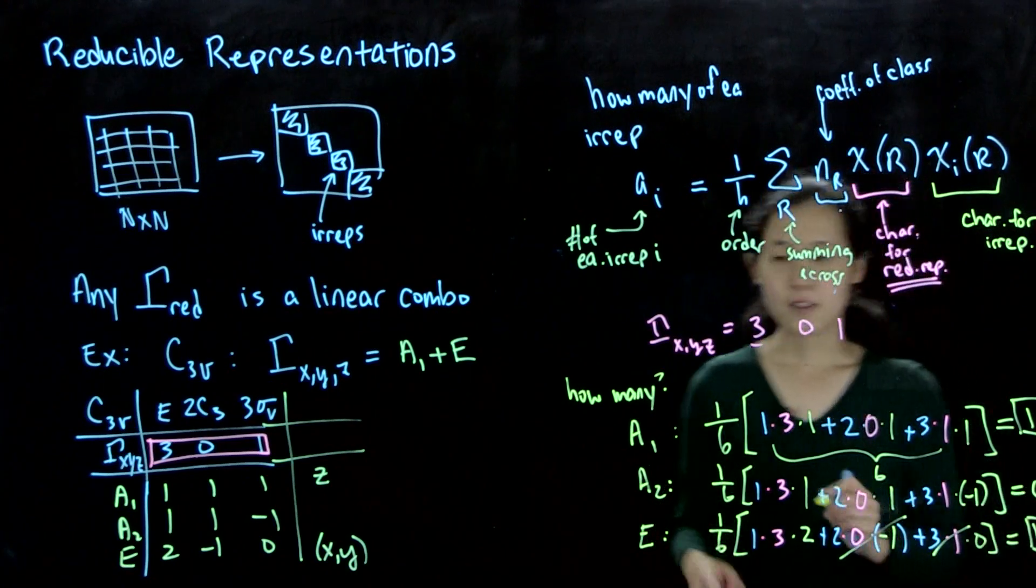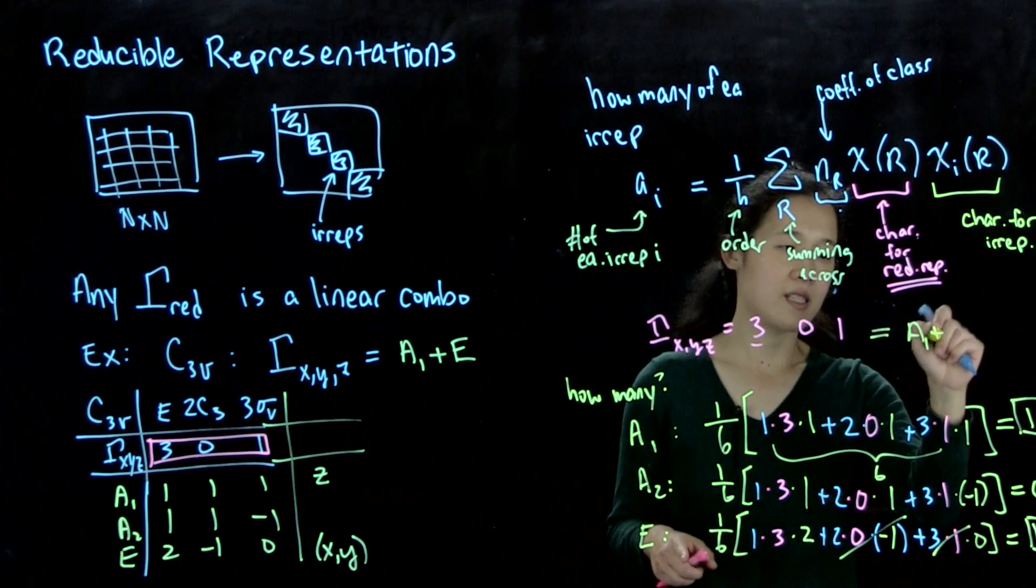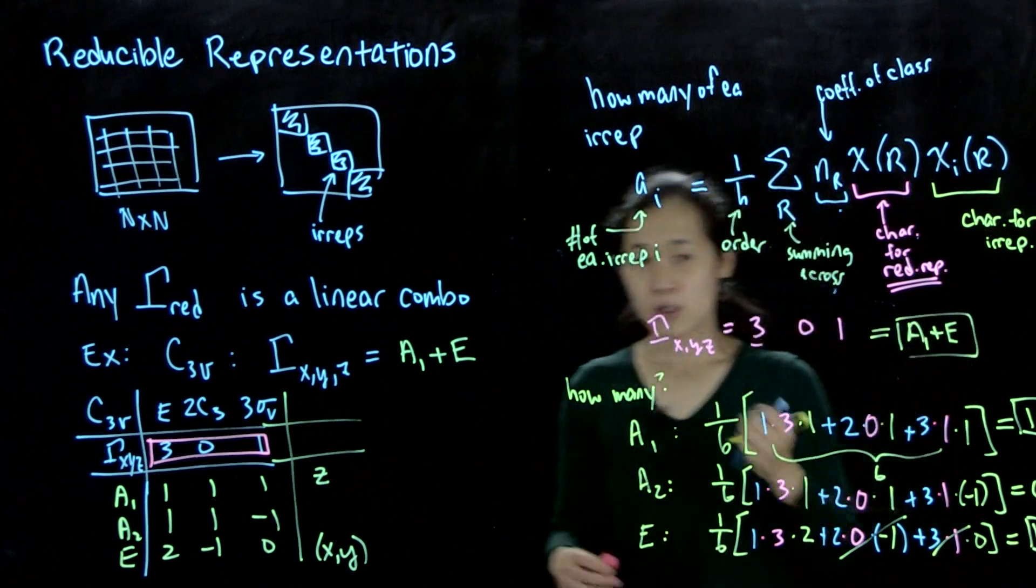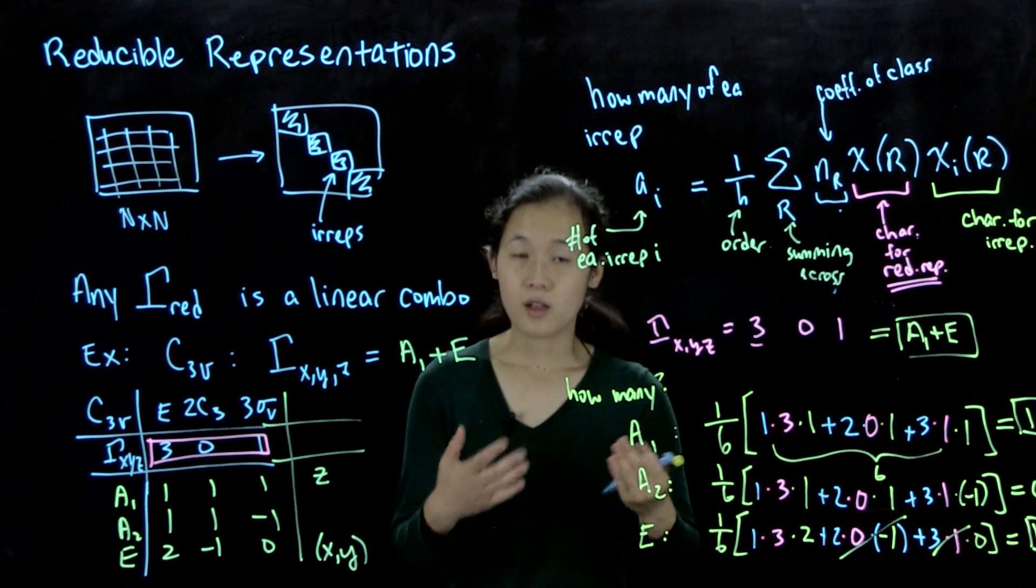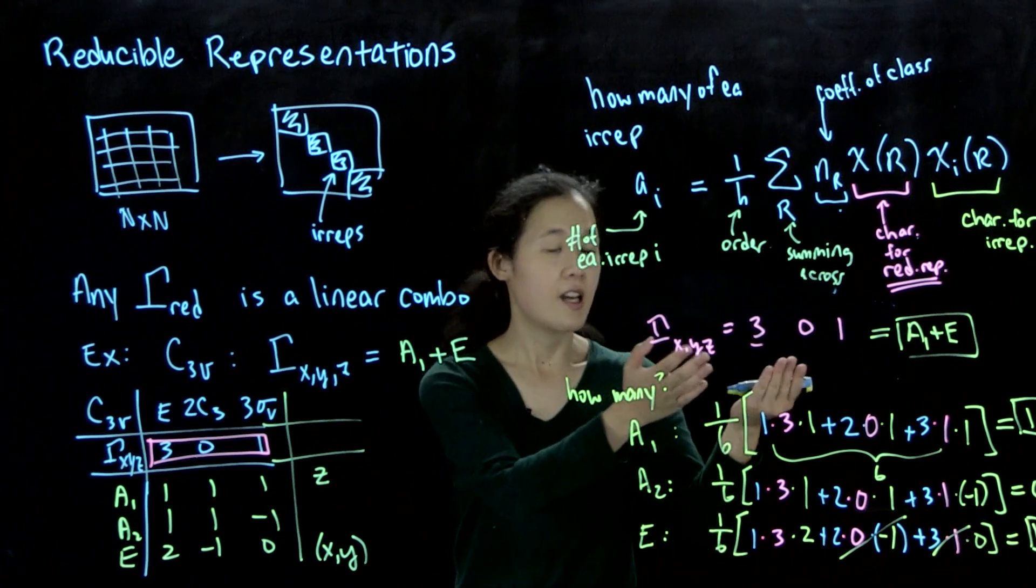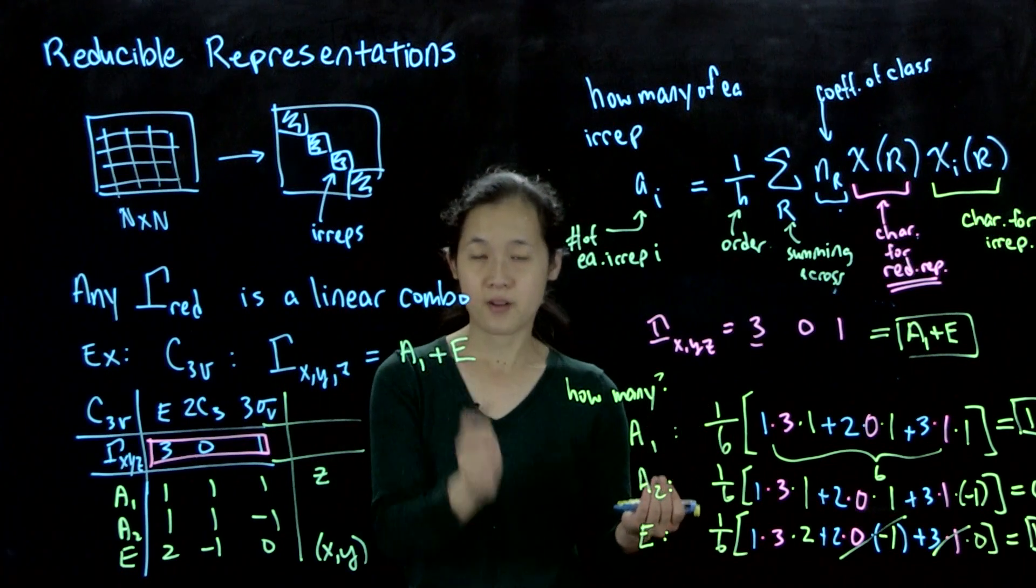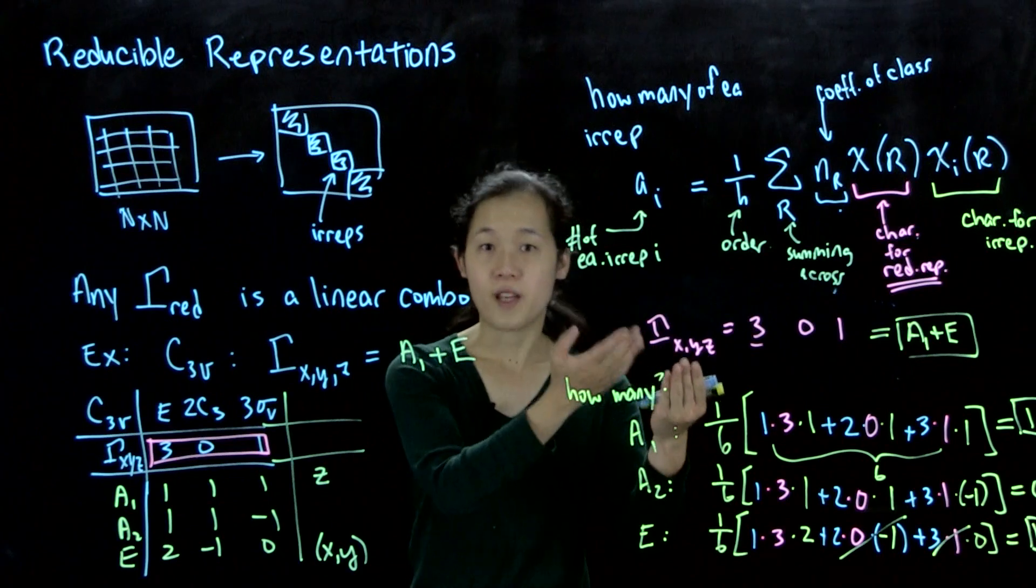Therefore, at the very end, we're able to show that gamma xyz equals, indeed, a1 plus e. So this is how we reduce a reducible representation down into a sum of irreducible representations. And therefore, we've block-diagonalized our matrix. This is how we're going to use character tables from now on to apply to more complicated basis sets.